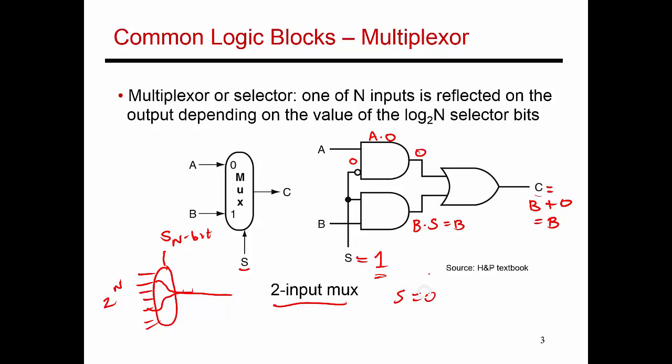If S is 0, then exactly the reverse happens, where what comes out here is B dot 0, so 0 is coming out. What comes out here is A dot the inverse of S, which is 1, so what comes out here is A. What comes out of the OR gate, C, is A OR'd with 0, which is nothing but A itself. So when S is 0, the value of C is A. When S is 1, the value of C is B. That's how you implement a multiplexer function, saying that depending on this code that I provide, the output is just going to be exactly equal to one of the inputs.